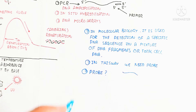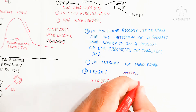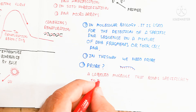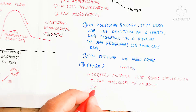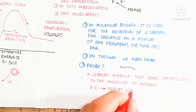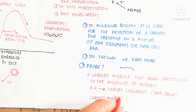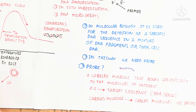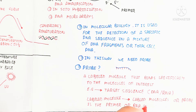A probe is a labeled molecule that binds specifically to the molecule of interest. The molecule of interest — the gene we are detecting in the whole genome — is confirmed when the primer attaches. The target sequence can be DNA or RNA, and the labeled probe molecule is a primer or RNA with an attached color or other label.